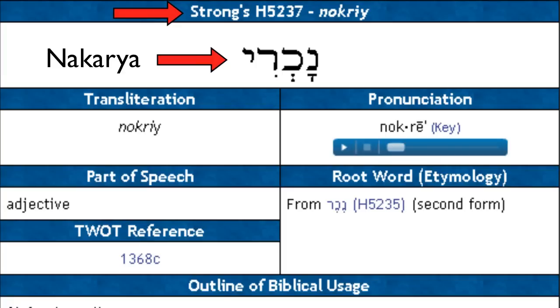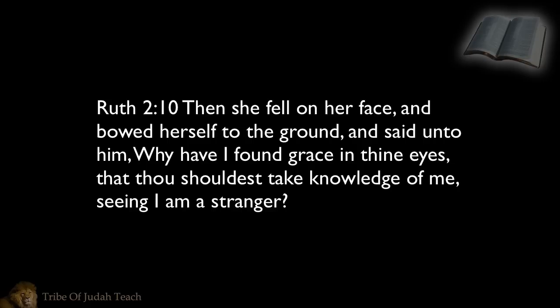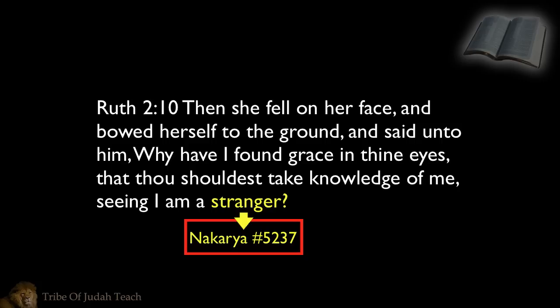The word Necariah is used to describe the other nations as strangers, but again it can also be used to describe an Israelite and we're going to prove it. A while back I did a video called Ruth the Israelite showing through the scriptures that Ruth was an Israelite, but some people didn't agree because Ruth said she was a Necariah. Let's look at that verse. Ruth 2 and 10 says, then she fell on her face and bowed herself to the ground and said unto him, why have I found grace in thine eyes that thou shouldest take knowledge of me, seeing I am a stranger? When you look the word stranger up in this verse, it's the Hebrew word Necariah. But it's not that simple — you can't just go by a certain Hebrew word and a certain concordance number.